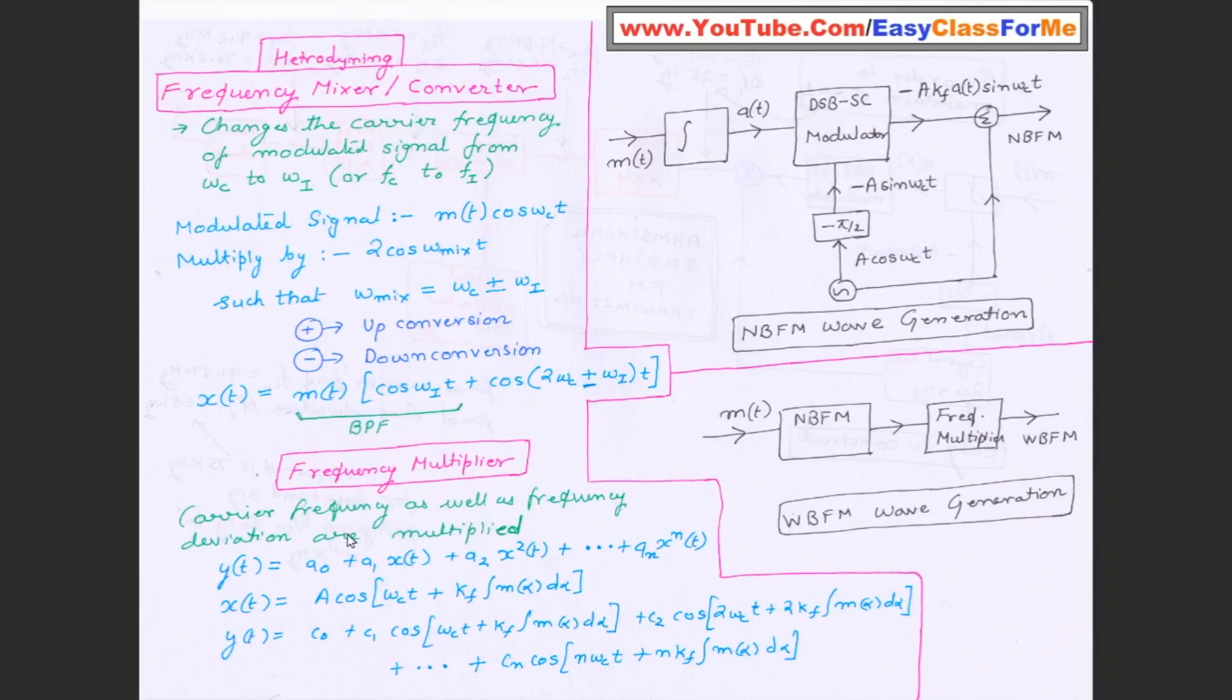Carrier frequency as well as frequency deviation are multiplied. So we have already done this in the video on NBFM and WBFM where if you have a system yt which is a non-linear combination of these things a1xt, a2x²t. So you see here there are various non-linear signals.